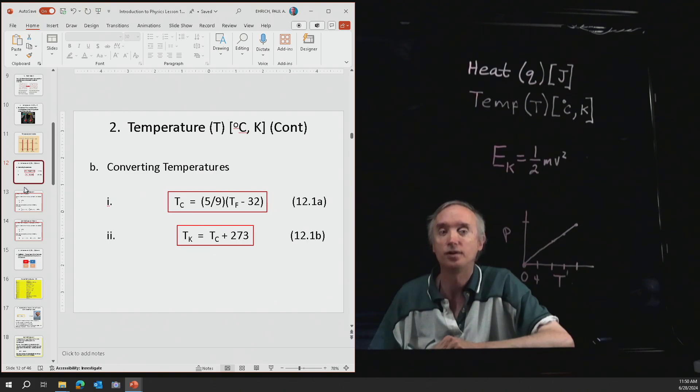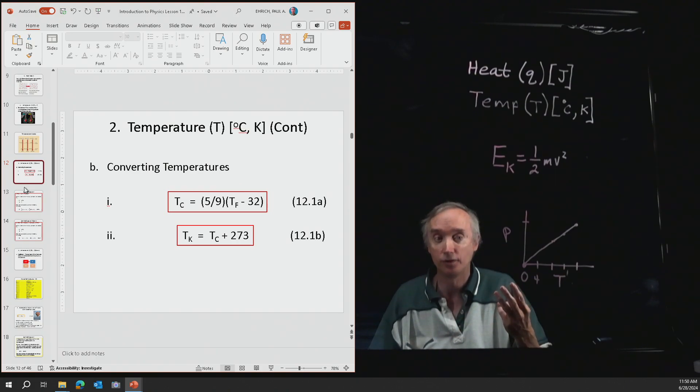Then to go to kelvin, you just add 273 to it. Notice that's the three significant figures. So if you want to be really more precise, you would say add 273.15 to that number. But we're just going to go to three significant figures in here.